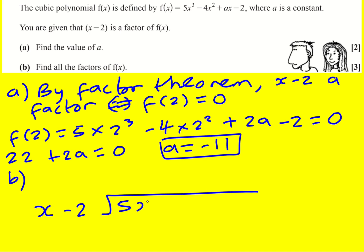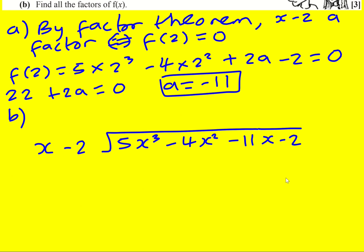So x minus 2 dividing 5x cubed minus 4x squared - with the new a replaced, a is minus 11 - x minus 2. So x is into 5x cubed give 5x squared, multiply back through by both, and subtract and subtract. Bring the next one down.